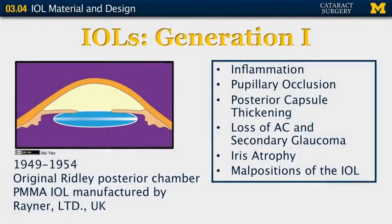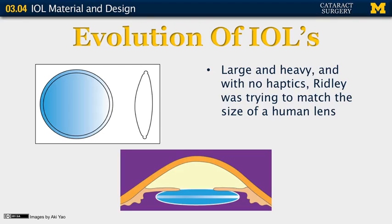This first lens lacked haptics and was associated with some problems. Patients tended to have chronic inflammation in the eye, and because it lacked haptics, there was occasionally occlusion of the pupil. There was significant posterior capsular thickening noted in many of the patients, and iris atrophy and general malpositions of the lens implant occurred over time. Here is a diagram showing the first Ridley lens. You'll see that it is round and again it lacks haptics. The lens was particularly heavy relative to a natural lens as well.